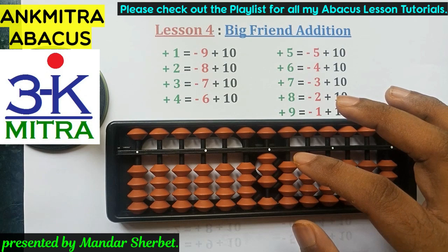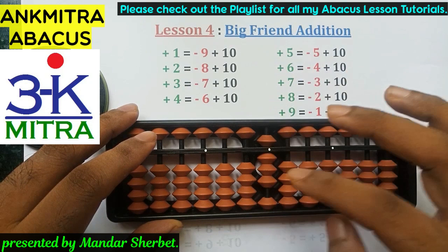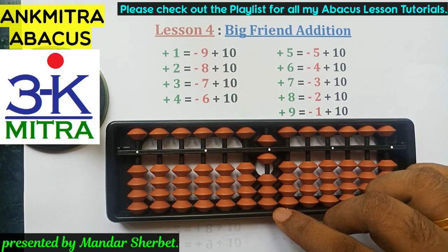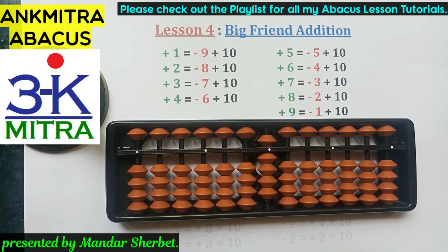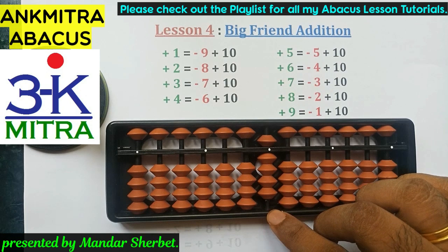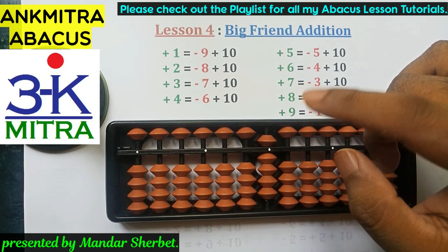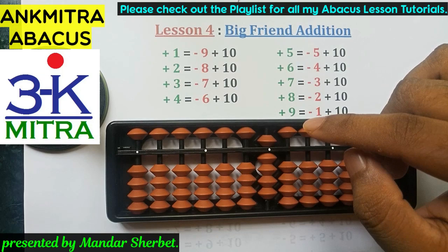We do plus five minus two to finish the addition of three the second time. For the third addition of three, we have enough beads available so we add directly. Now for the fourth addition of three, we don't have enough beads on the lower side and the upper bead of five has already been used. Since we cannot do it directly and cannot do it using the small friend formula, only then we use the big friend formula. The big friend of three is seven.